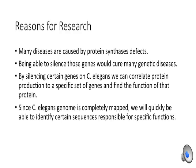The reasons for this research outweigh many of the costs. Many diseases are caused by protein synthesis defects, and targeting mRNA can prevent this. Being able to silence those genes would cure many genetic diseases. By silencing certain genes in C. elegans, we can correlate protein production to a specific set of genes and find the function of that protein.